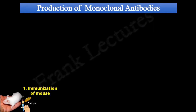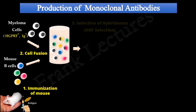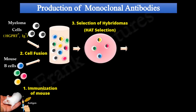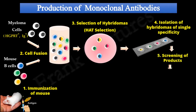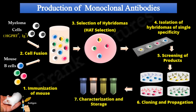To sum up, monoclonal antibodies are antibodies specific for a single antigenic determinant, and the technology involved in their production is called hybridoma technology. Hybridoma technology involves immunization of an animal, isolation of B lymphocytes, fusion of lymphocytes and myeloma cells, selection of hybridoma cells using HAT medium, and large-scale production of monoclonal antibodies.